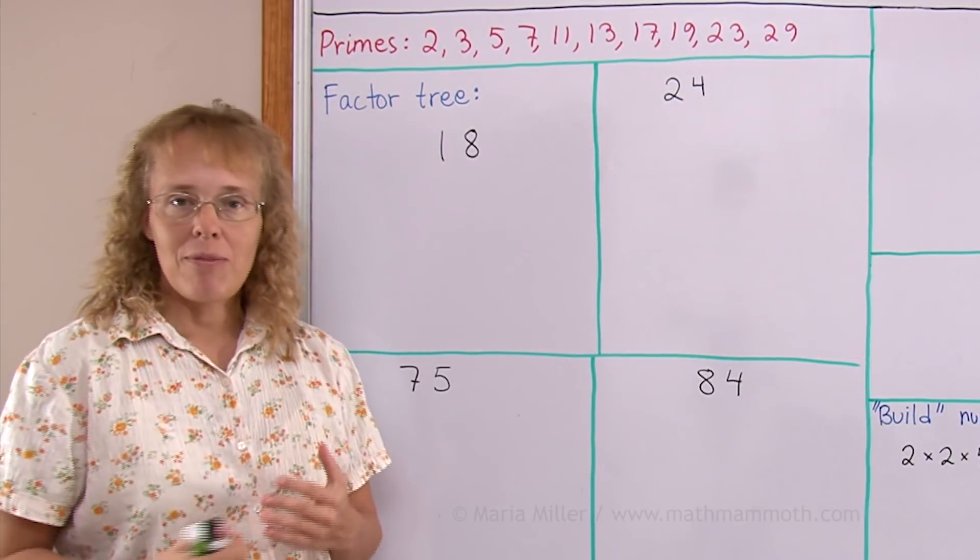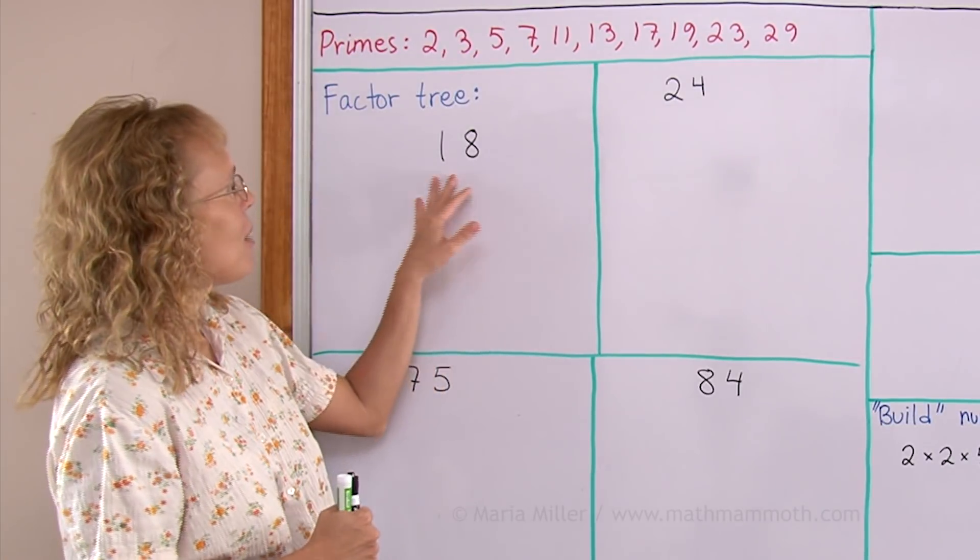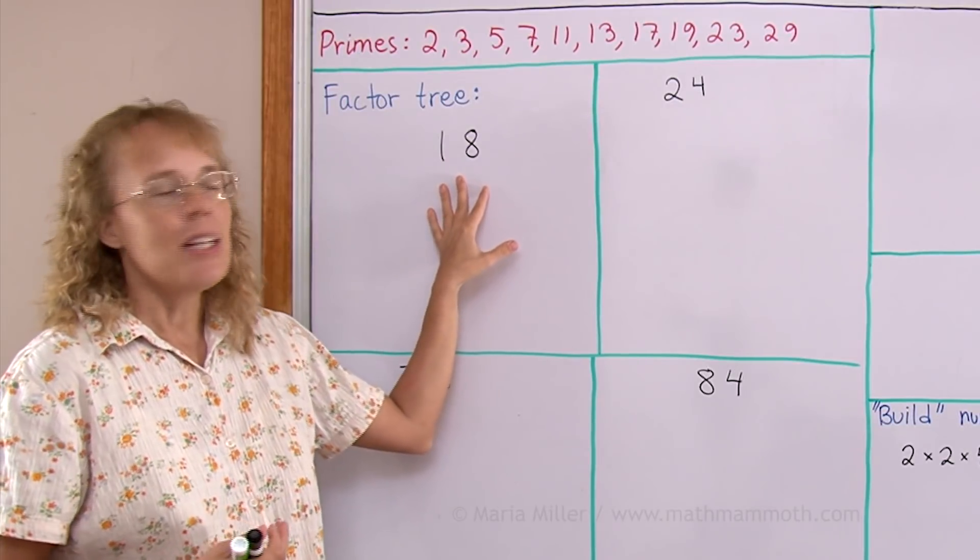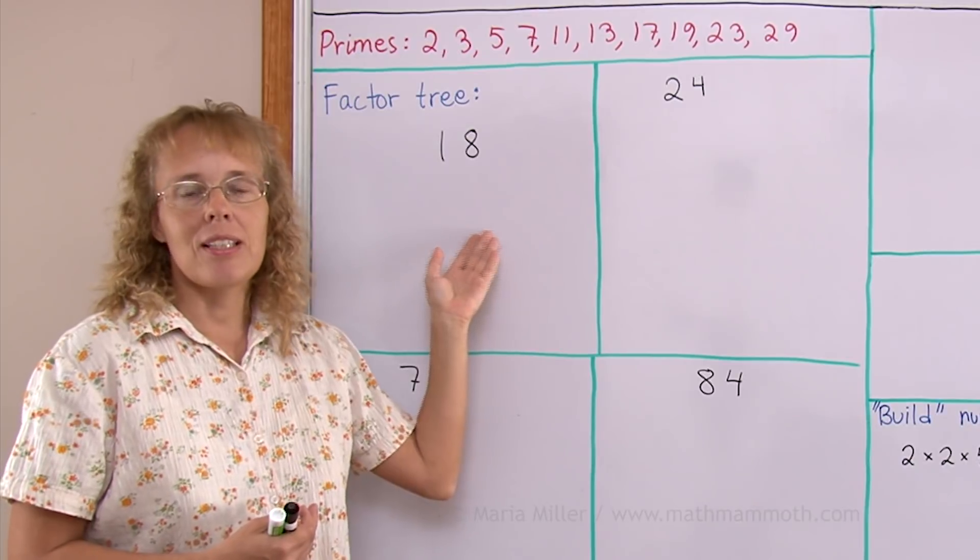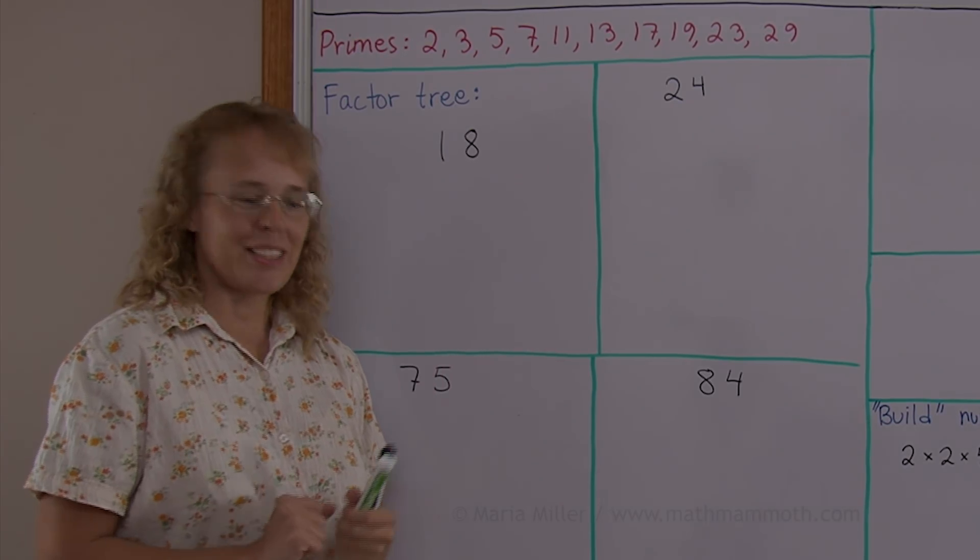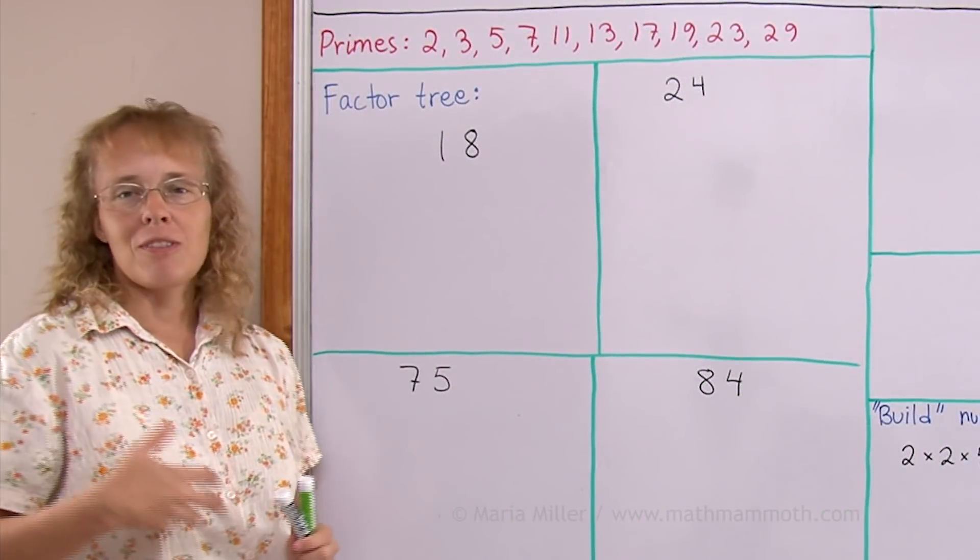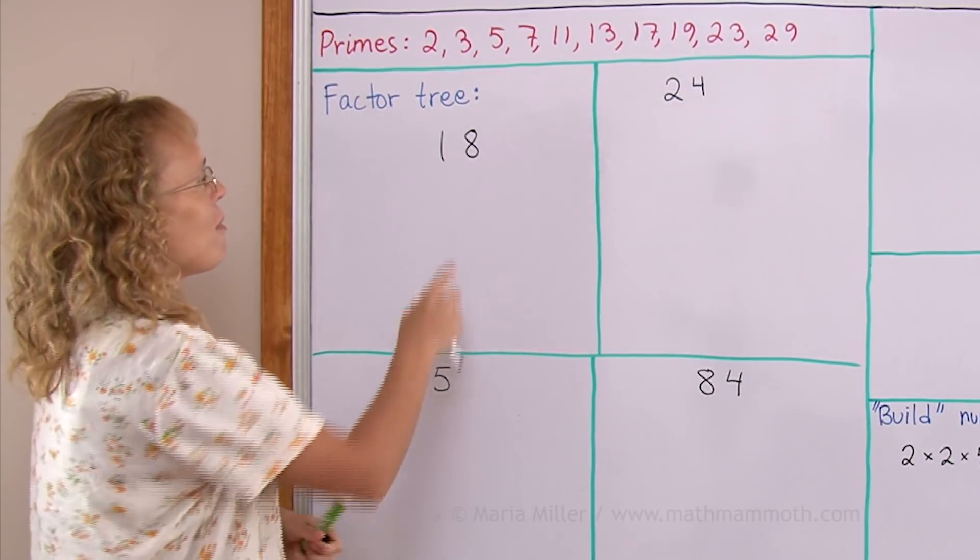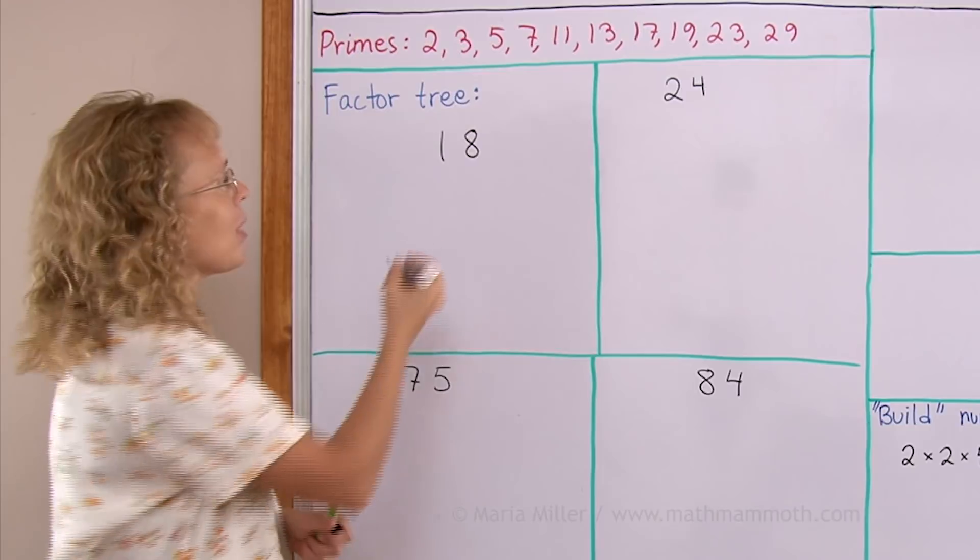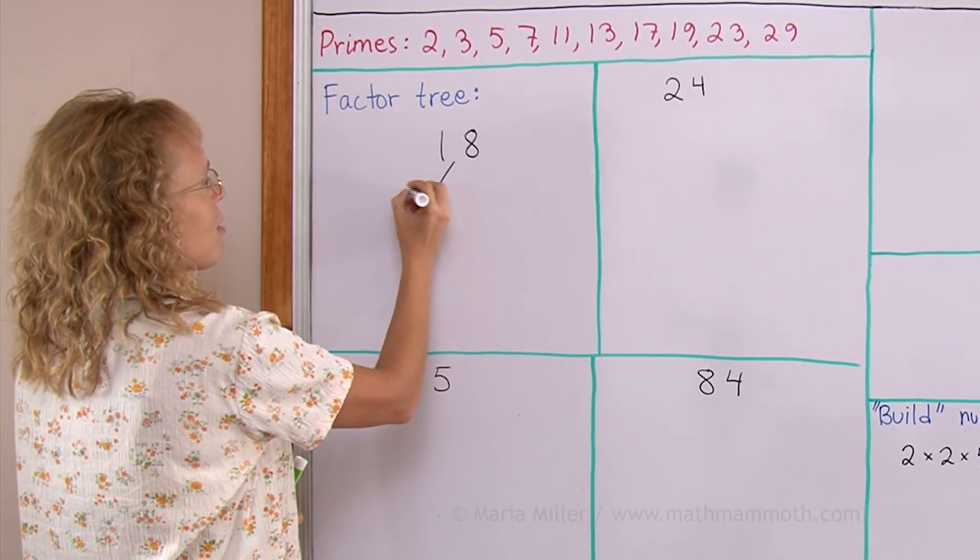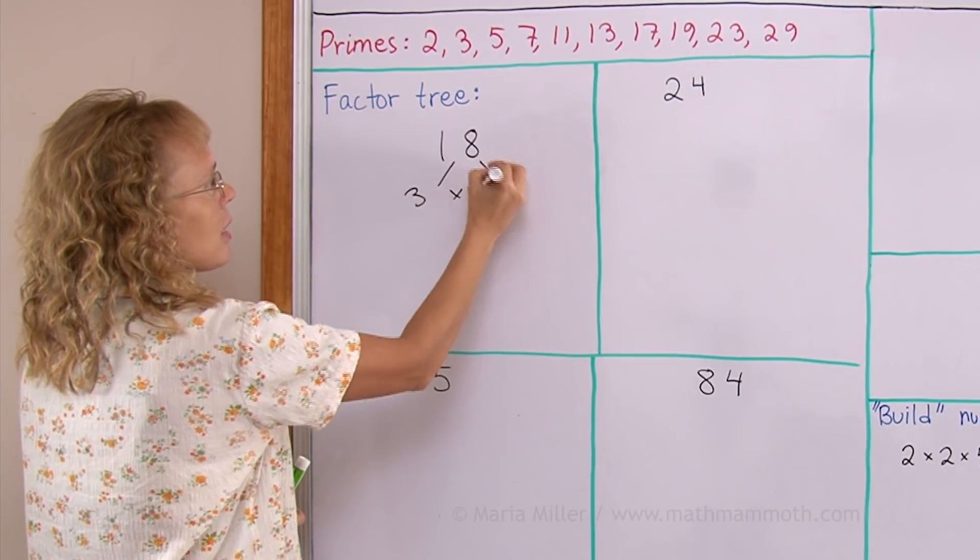Prime factorization means that we take numbers that are not primes and we write them as something times something. We will use the model of a factor tree. My first step here in 18 is to write 18 as something times something, whatever comes to mind, such as 3 times 6.